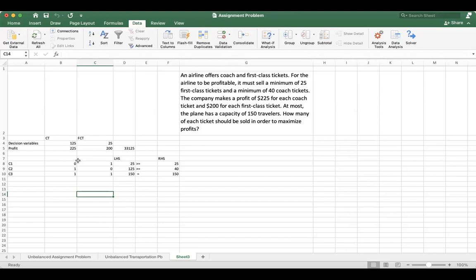You can see to earn the maximum profit by also fulfilling the given constraints, the maximum profit would be $33,125, and we must book 125 coach tickets and 25 first-class tickets.